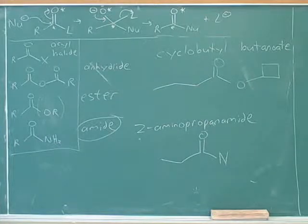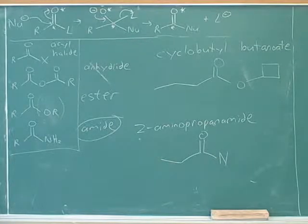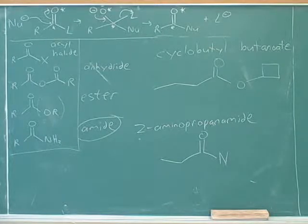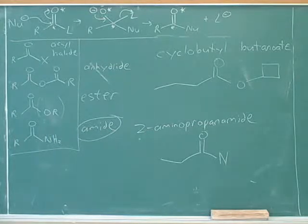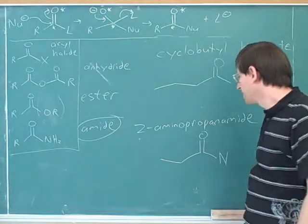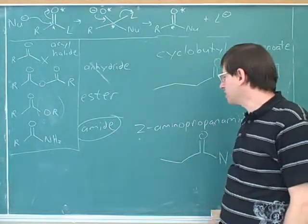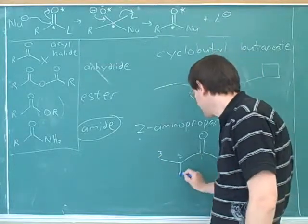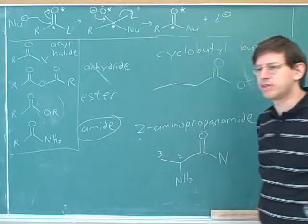That's a good start. That's another one where you didn't seem too happy with your answer, but you got the right answer. That is the right answer. So prop means three carbons, amide means that it's an amide. Now we have an amino substituent, and what's the location of the amino substituent? It's on the number two carbon. We know this is the main chain here: one, two, three. So you're absolutely right, you put that amino substituent in the exact right place.